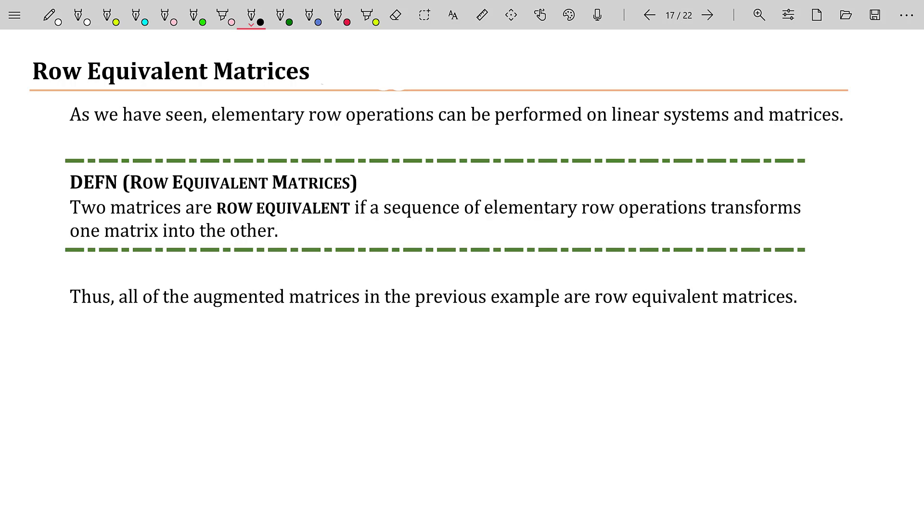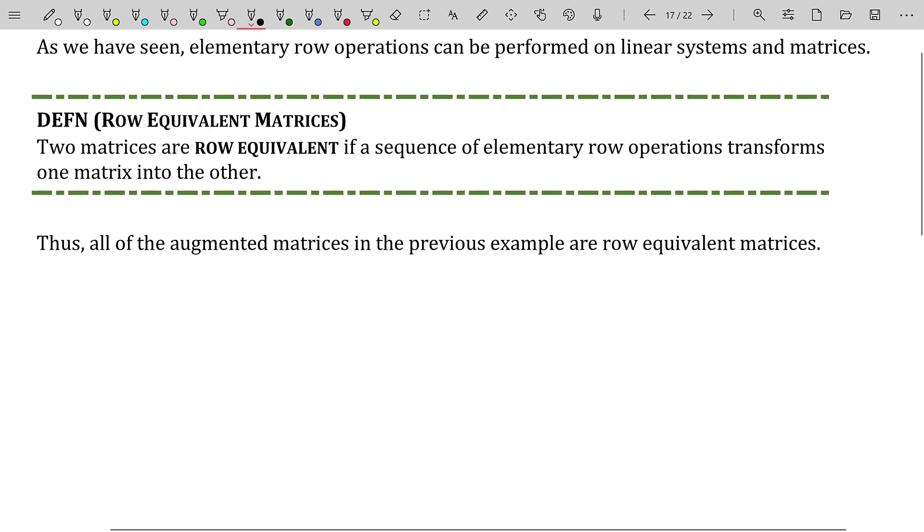It's a pretty simple definition. The definition goes like this. Two matrices are row equivalent if a sequence of elementary row operations transforms one matrix into the other.